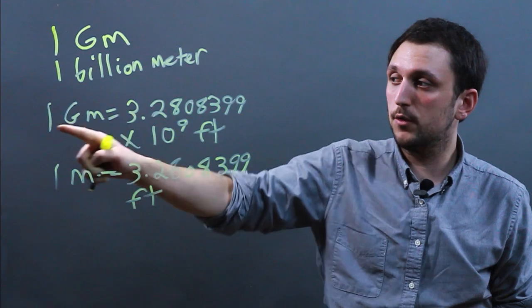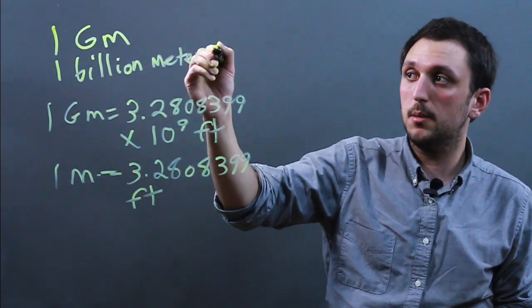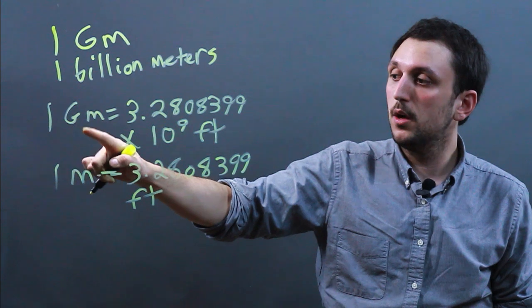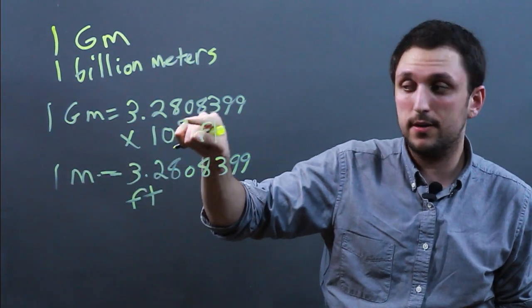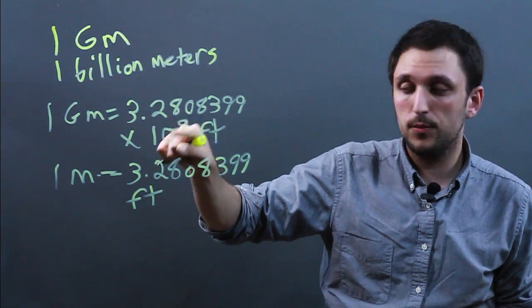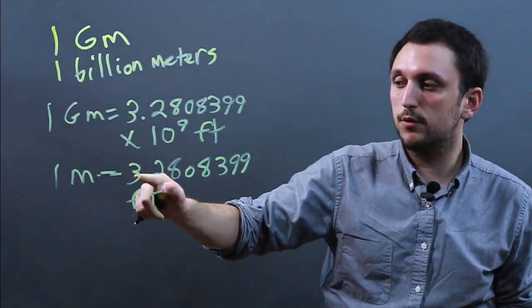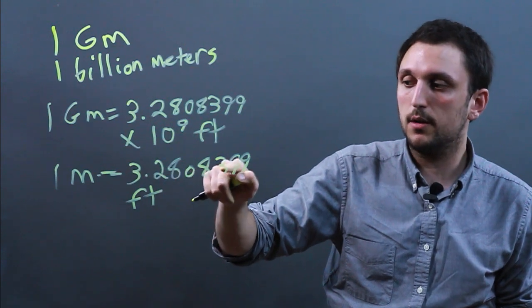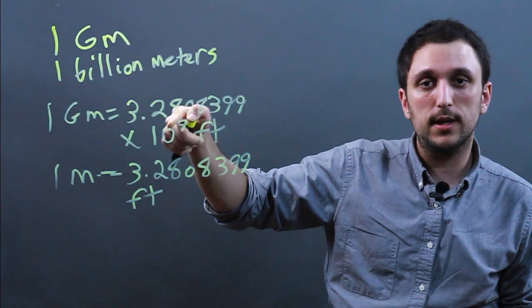Because one gigameter is one billion meters, we say one meter times 10 to the ninth, which is a billion, gives us a billion meters, which is 3.2808399 feet times 10 to the ninth.